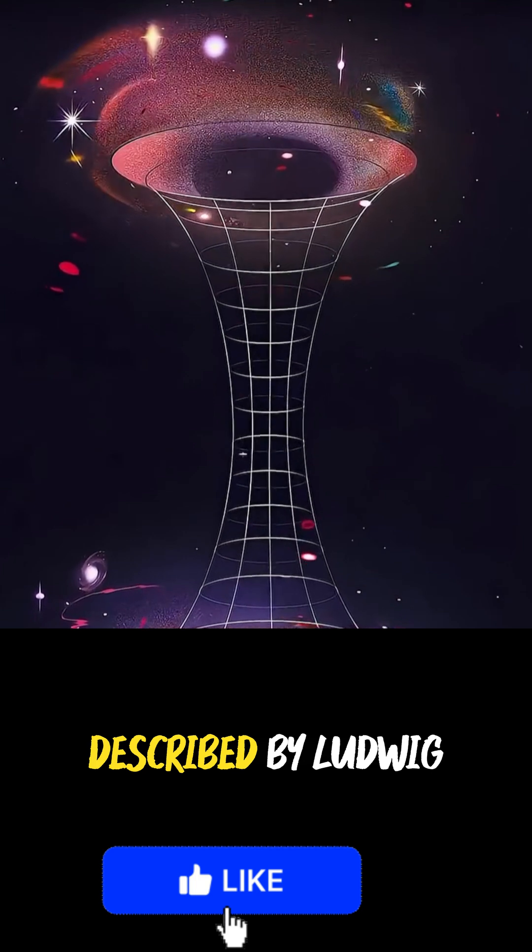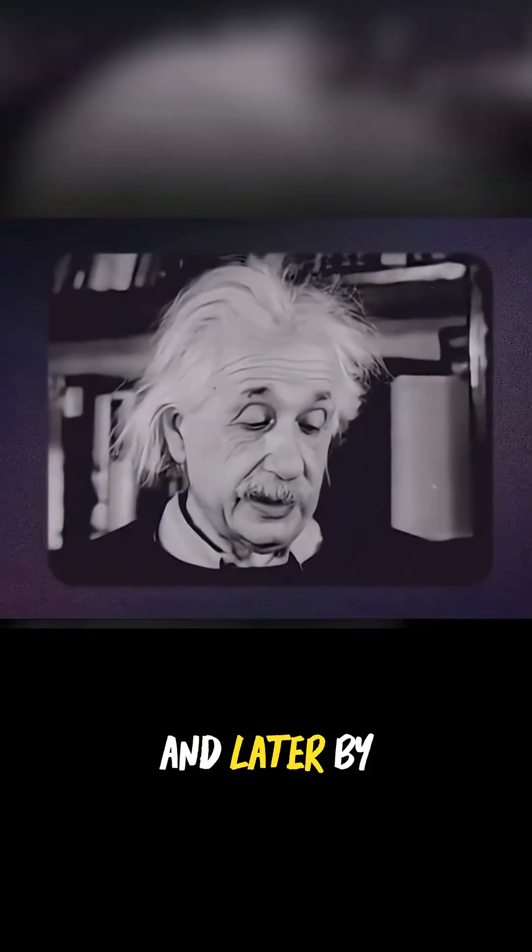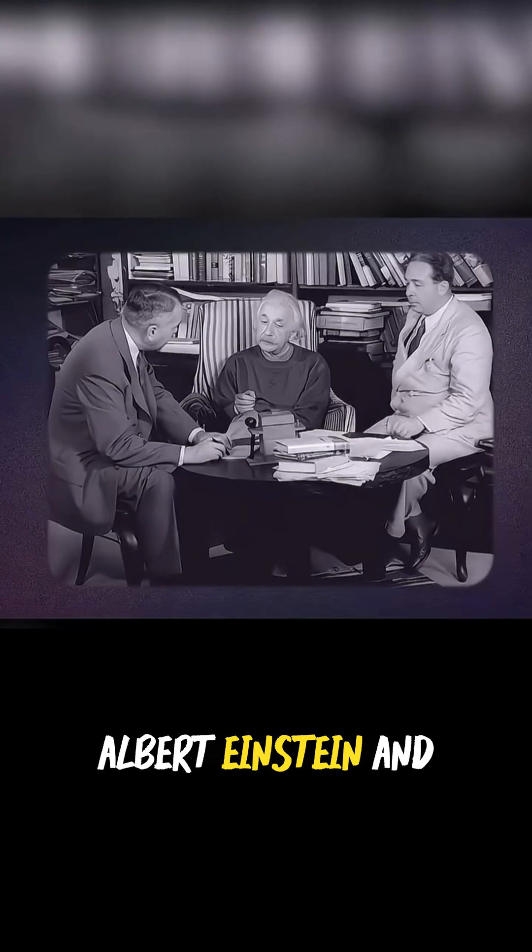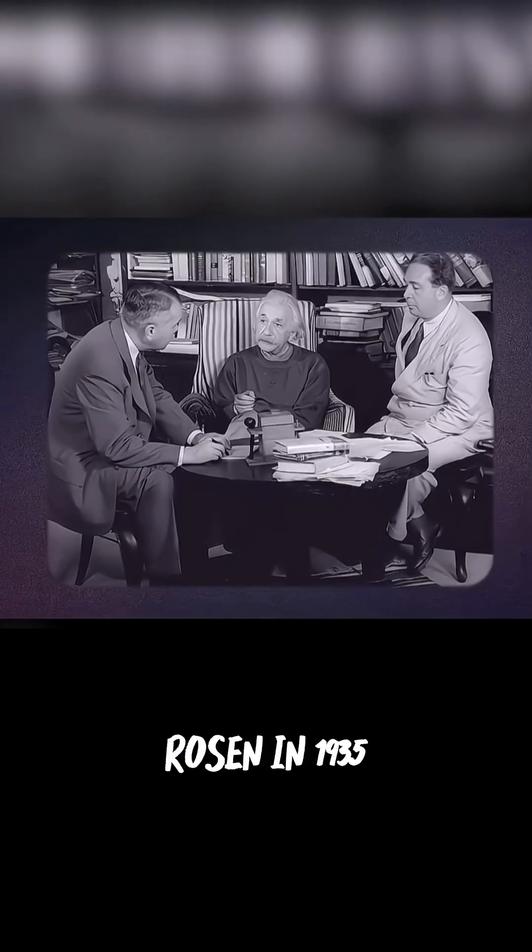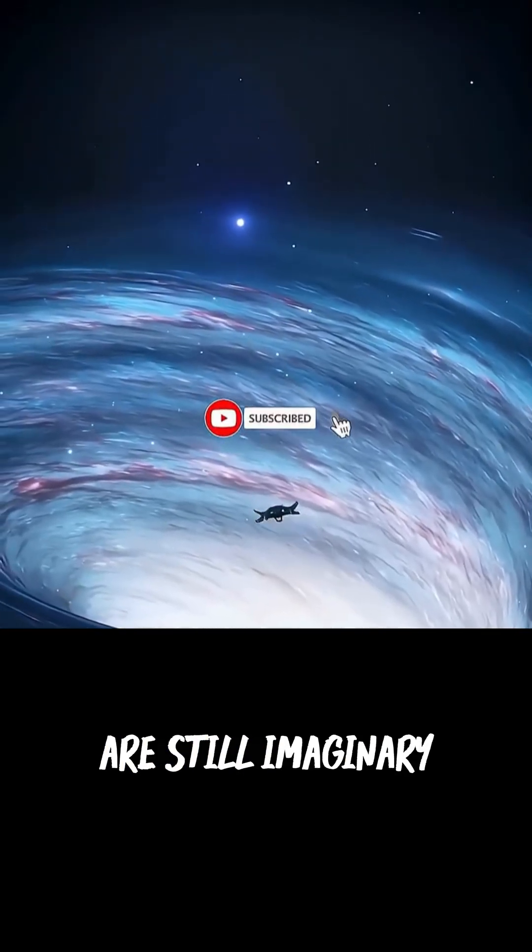Wormholes were first described by Ludwig Flam in 1916, and later by Albert Einstein and his friend Nathan Rosen in 1935. But the problem is that wormholes are still imaginary.